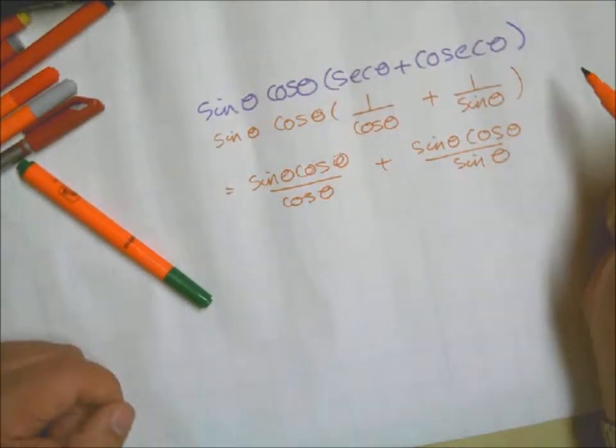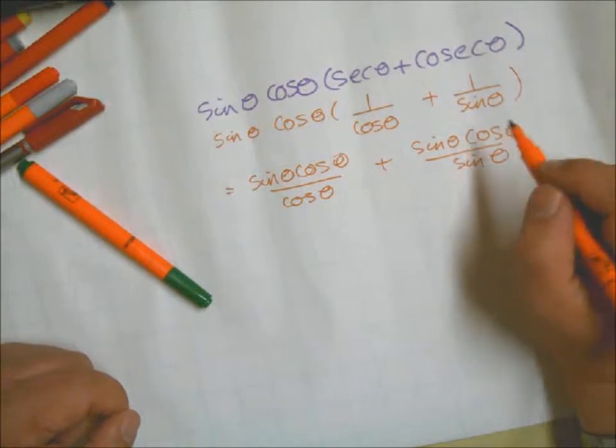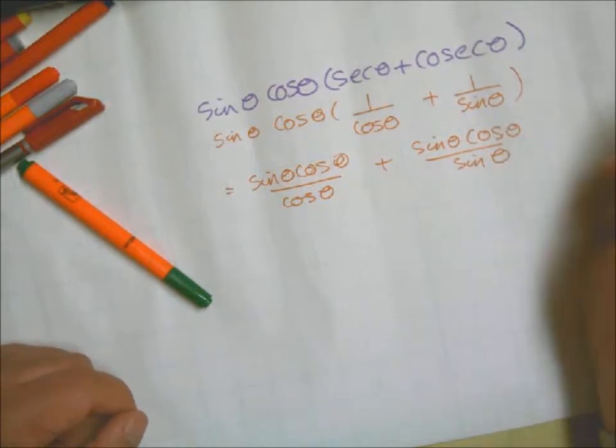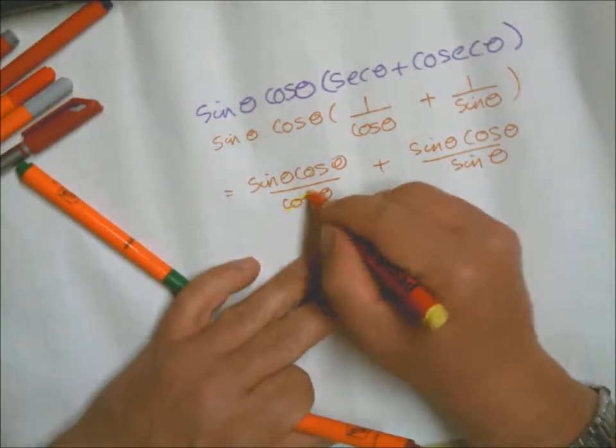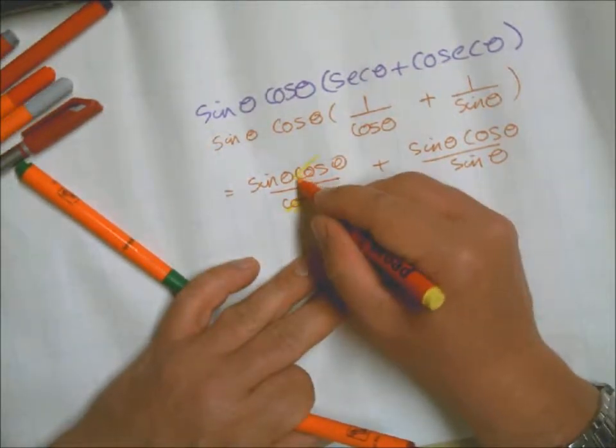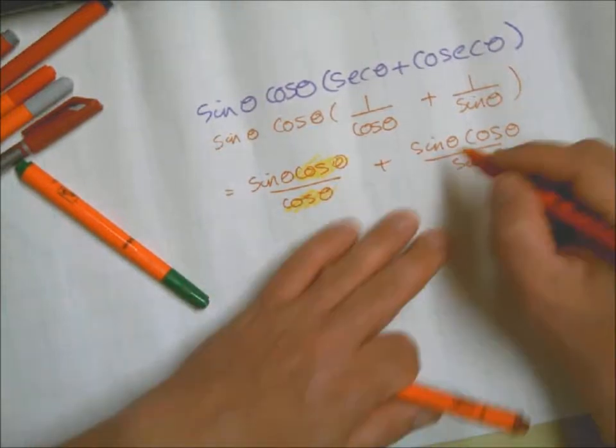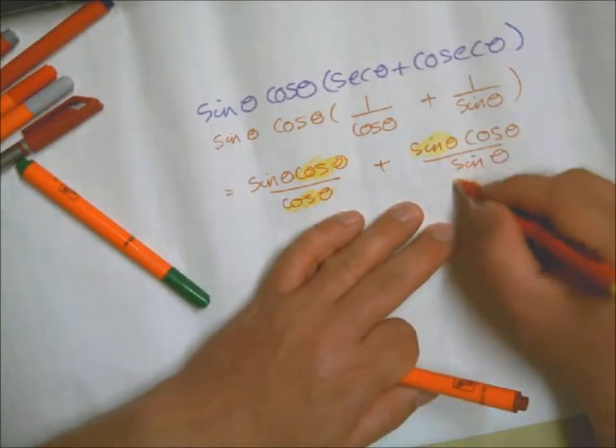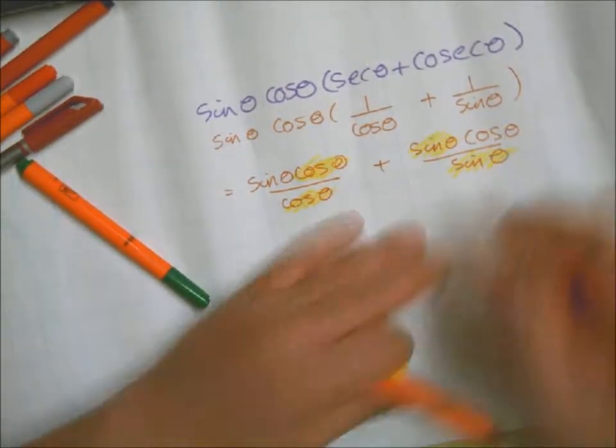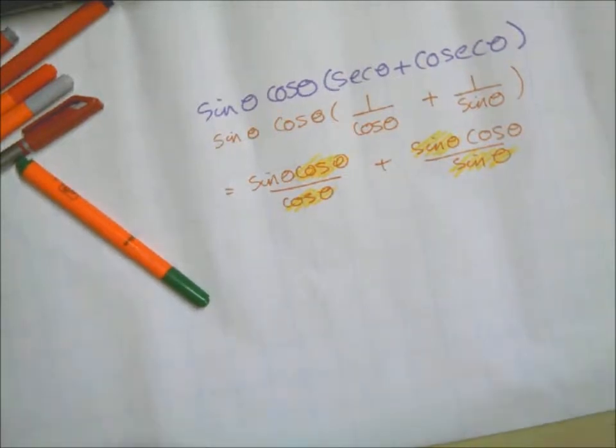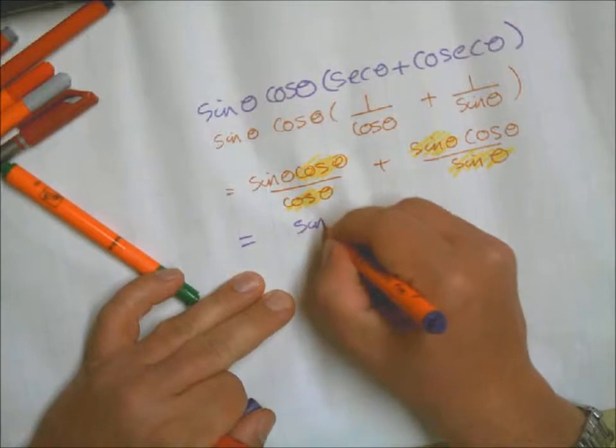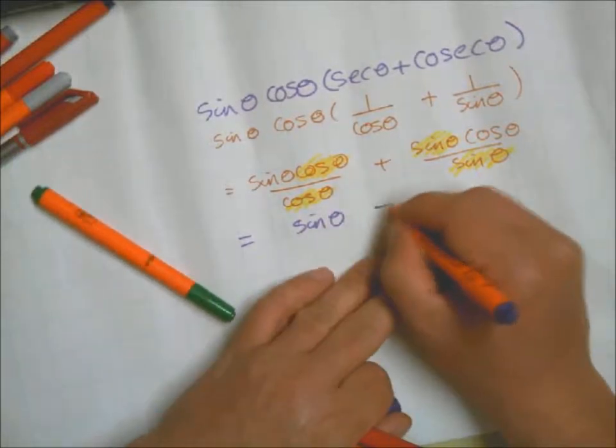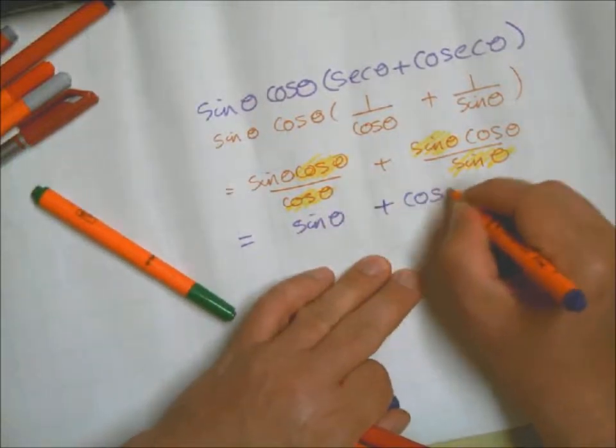We've got sine theta cos theta divided by cos theta plus sine theta cos theta divided by sine theta. Now you can probably see ahead and think couldn't we just cancel out straight away? Well, I'm trying to make a point here, so I'm going to take my time. Also a nice chance to do a little bit of coloring: you've got cos there and cos there, you've got sine there and sine there.